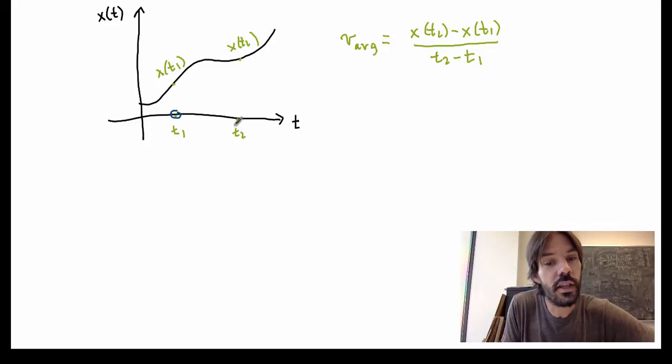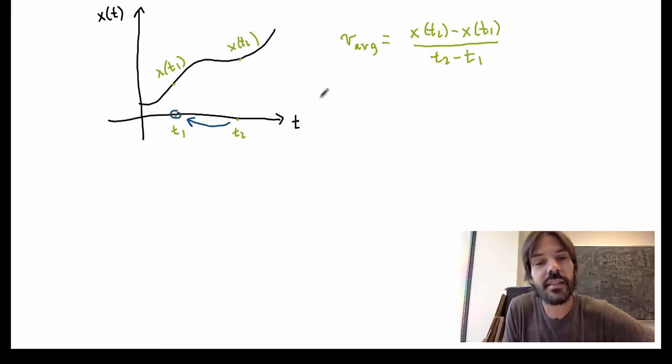What we can do is choose our second moment of time to be very, very close to t1. So I'm just going to draw an arrow here, saying that I'm bringing t2 to be very, very extremely close to t1, so that the average velocity becomes average over a very small interval of time around t1. And in fact, this can be defined mathematically. What we say is that we're bringing t2 infinitesimally close to t1. By the way, infinitesimal is a word that I have a very hard time saying in English, so don't laugh at me.